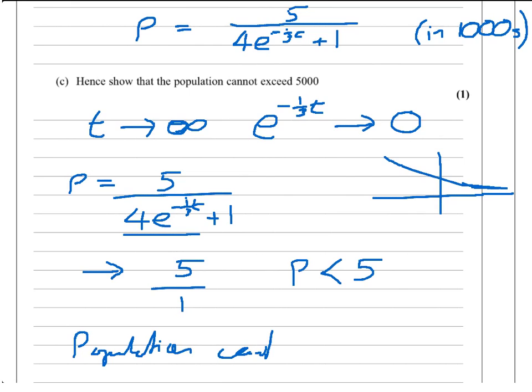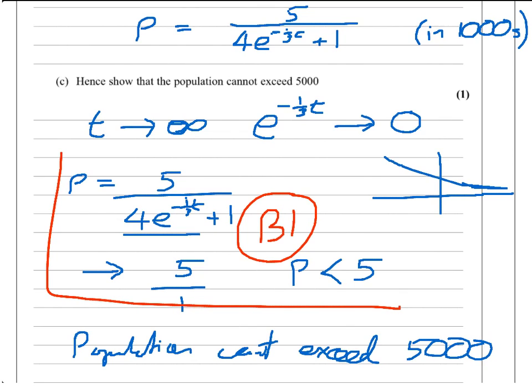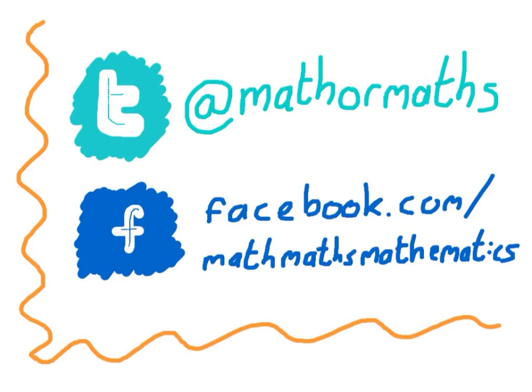Clearly, you're evaluating what happens as t goes towards infinity. Obviously, you get the exponential going towards 0, so you can see what you're tending towards. And that's it, effectively. Because it's in thousands, just state your conclusion. P is less than 5, therefore, population cannot exceed 5,000. It's a one-mark question. They really just want to see this sort of bit of interpretation here, that you understand what's happening. But that's it. Differential equations, done. That's C4 paper, done. Do get in touch with me, though. My Twitter address is at math or maths, and my Facebook address is on the page. Do get in touch, tell me what videos to make. I want to help you pass these examinations and get great grades. Good luck in all of your examinations.